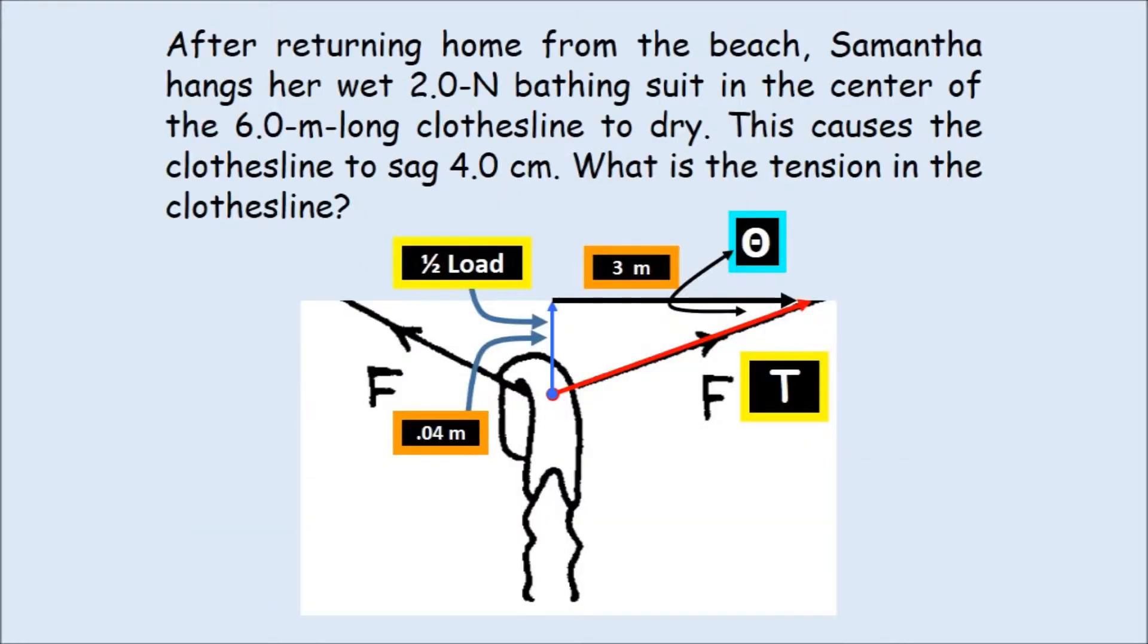After returning home from the beach, Samantha hangs her wet 2 newton bathing suit in the center of the 6-meter-long clothesline to dry. This causes the clothesline to sag 4 centimeters. What is the tension in the clothesline? Well, the clothesline is going to be 6 meters long. So half it's going to be 3 meters. The sag is going to be 0.04 meters.